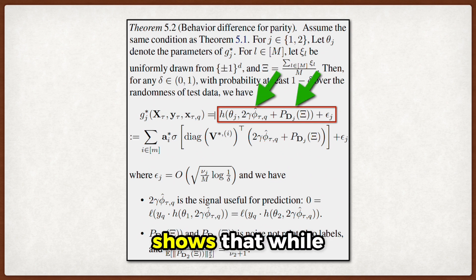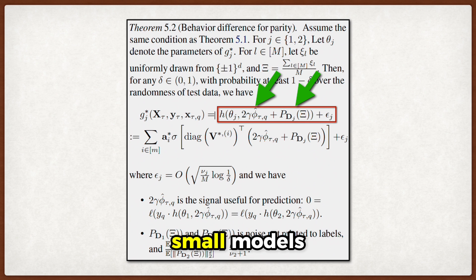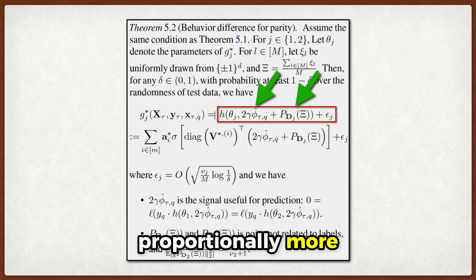Theorem 5.2 shows that while both large and small models capture the signal equally well, the noise component affects larger models proportionally more.